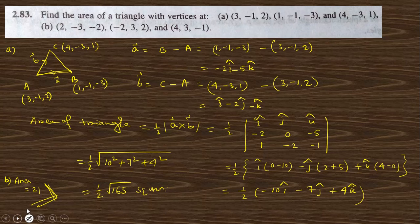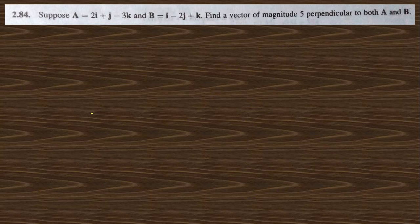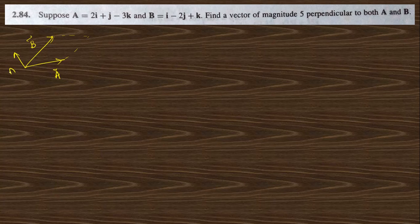Next, question 2.84: suppose vectors a and b are given — find a vector of magnitude 5 perpendicular to both a and b. You know that if we take the cross product a cross b, then that cross product is perpendicular to both a and b. So a cross b is computed using the determinant with i cap, j cap, k cap.